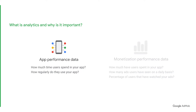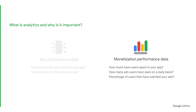Typically, app performance data includes how much time users are spending in your app, how often they use your app, and more. And monetization data usually includes how much users have spent in your app, how many ads users have seen on a daily basis, the percentage of users that watch ads in your app, and more.